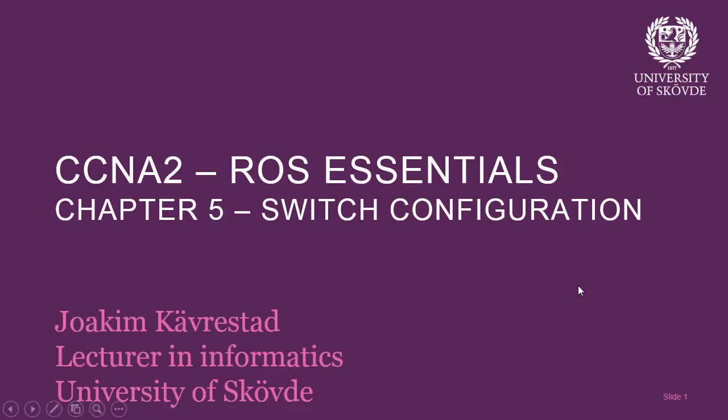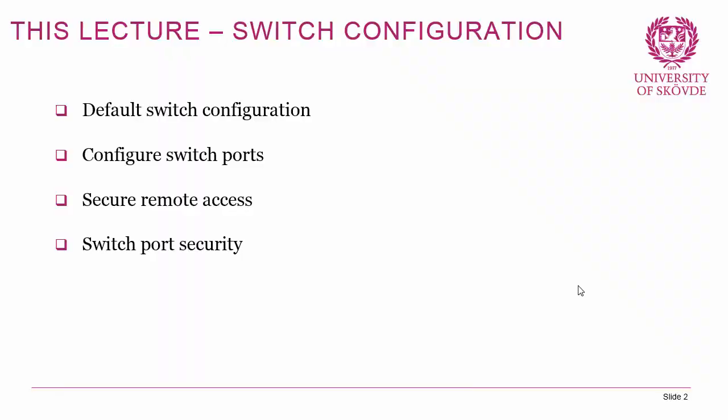So with that said, let's go on to this lecture which is about switch configuration. We're going to go through default switch configuration, how to configure switch ports, how we can securely remote access the switch, and we're also going to discuss switch port security. For the remote access part, there is special configuration needed because a switch is a layer 2 device by default, so we have to do some configuration to make it accessible through IP.